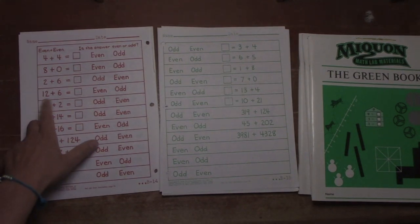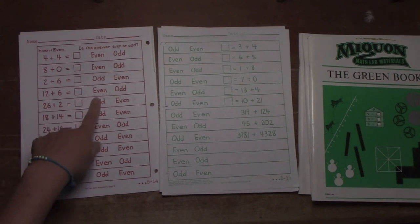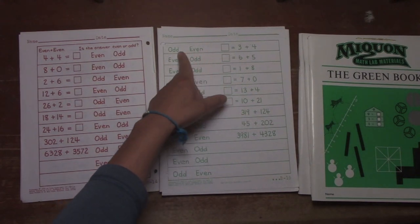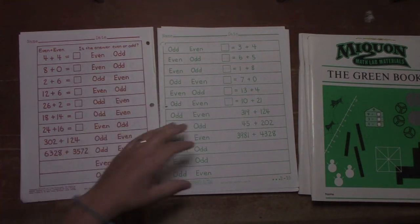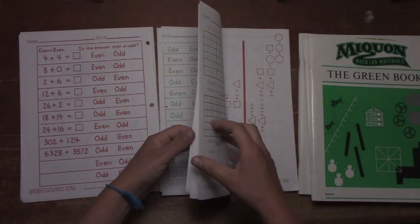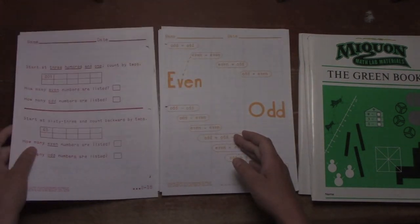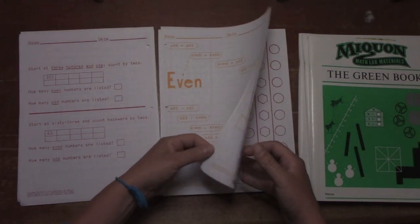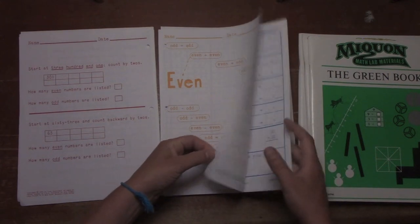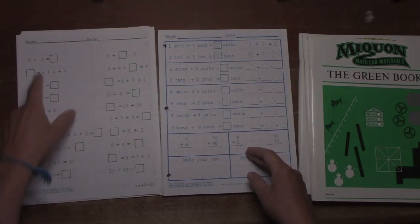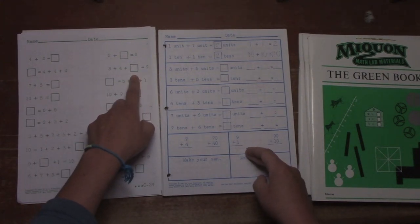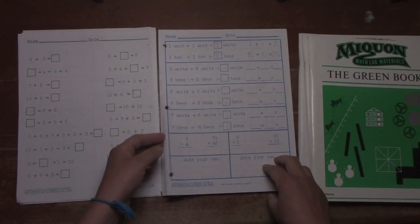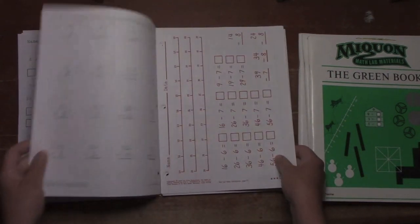But you can see here that they'll actually discover a very important mathematical concept with these problems based on knowing the definition of even and odd. For example, they'll discover that when you add two even numbers together, you always get an even number at the end. But when you add an odd and an even number together, you're always going to have an odd number at the end. So they're going to see these patterns. And that's how Miquon sort of shows them the concepts. They're going to see the patterns throughout the book.